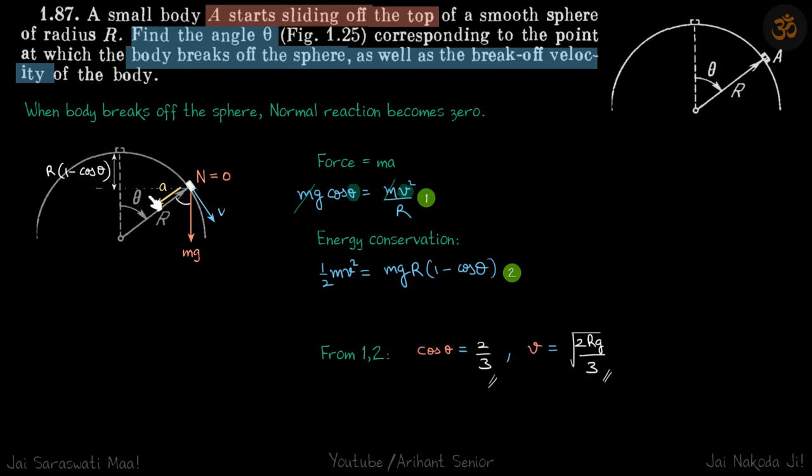So just a moment before it is breaking off, it is still on the surface and the normal reaction approaches zero because once it breaks off the normal reaction becomes zero. So we are talking about that instant, so we can say that at that instant the normal reaction is zero but it is still traveling on the circular path.